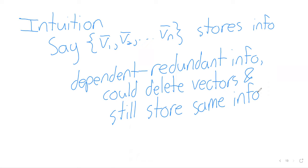On the other hand, if the set of vectors is independent, then deleting any vector also deletes information. That's our intuition behind why we care about dependence and independence - we want to eliminate redundant information and look at the least amount of data for the information we're trying to store.